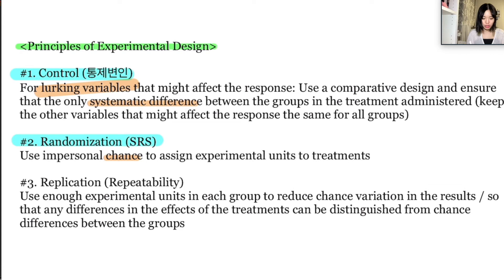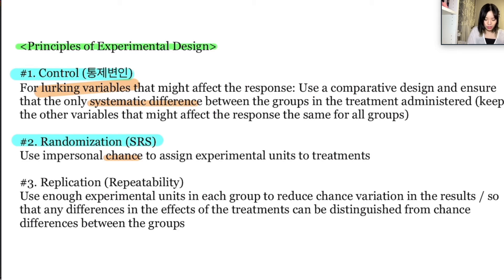Randomization helps to create roughly equivalent groups of experimental units by balancing the effects of the lurking variables that aren't controlled on the treatment groups. The last principle is replication.